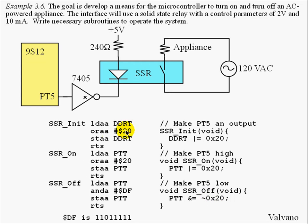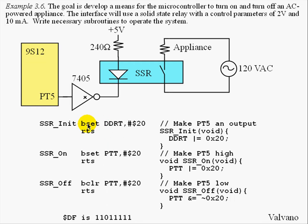Can you think of a quicker way to write this assembly language? In this example, each of the functions used three instructions to set and clear bits. Yes — we could have used the bit set and bit clear instructions to make the program run a little faster. The bit set and bit clear are indeed friendly, only changing the one bit as needed.